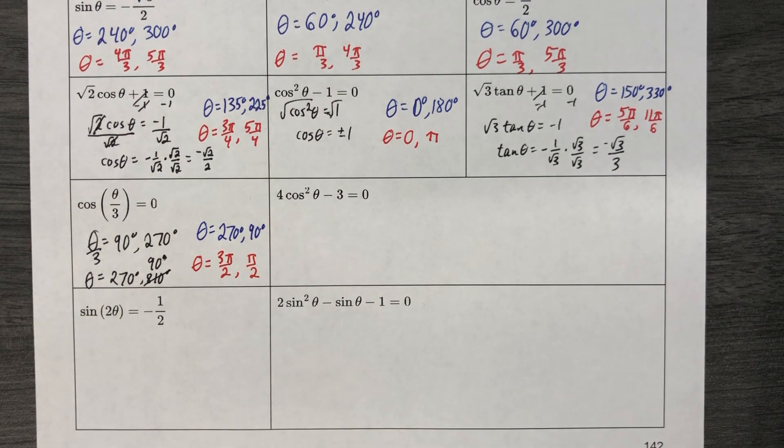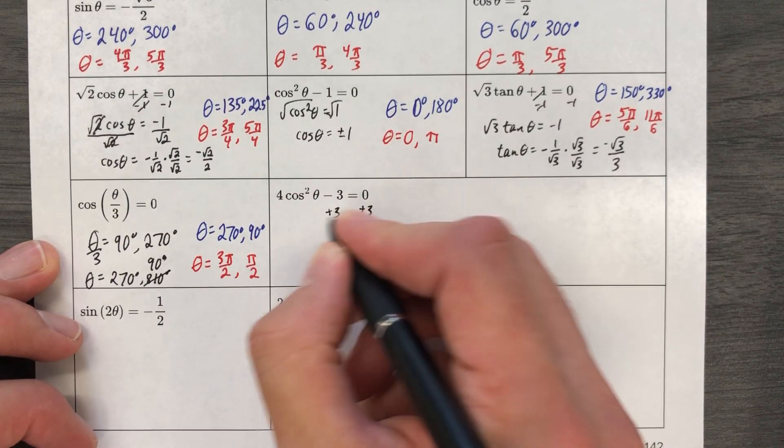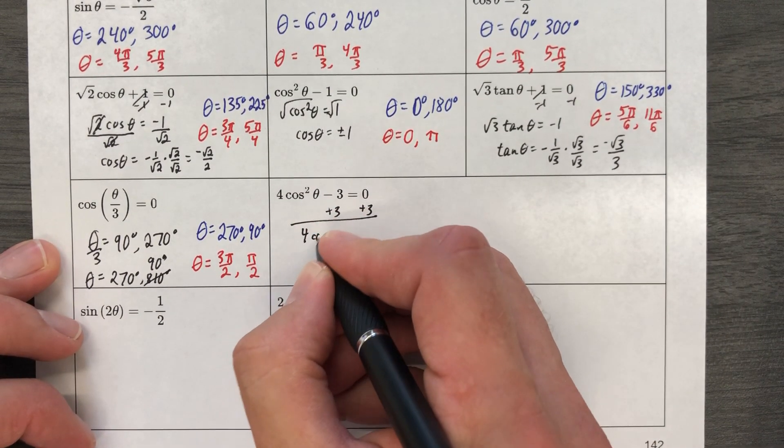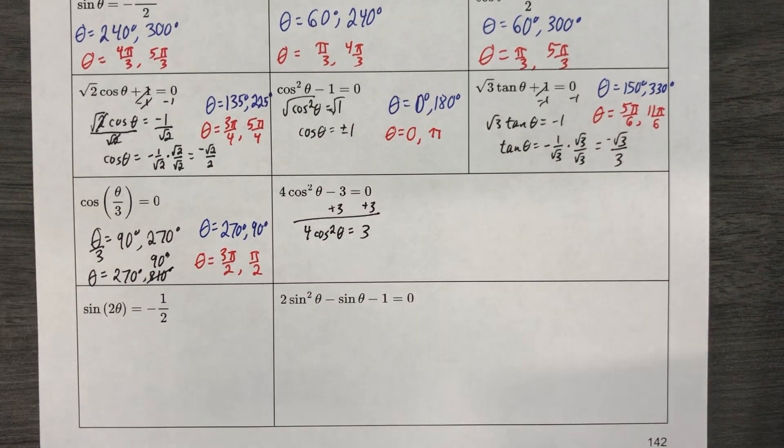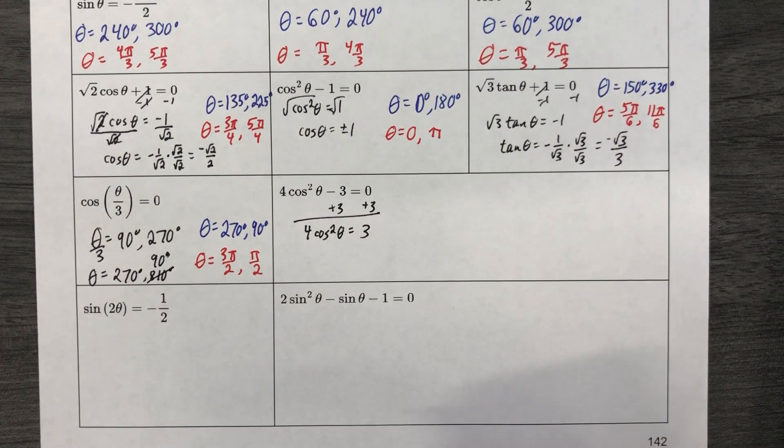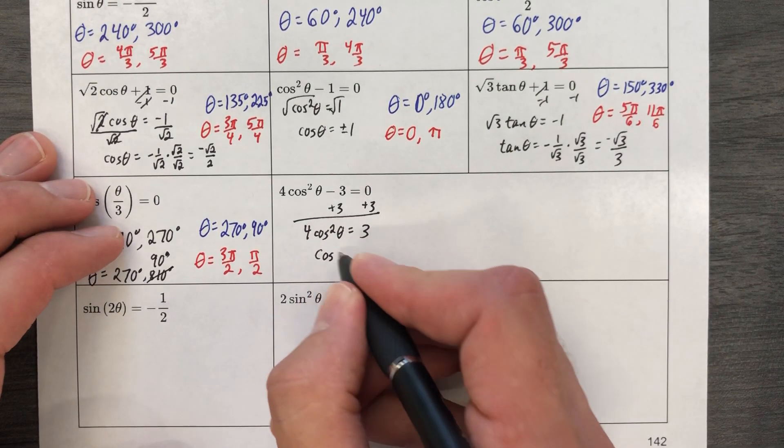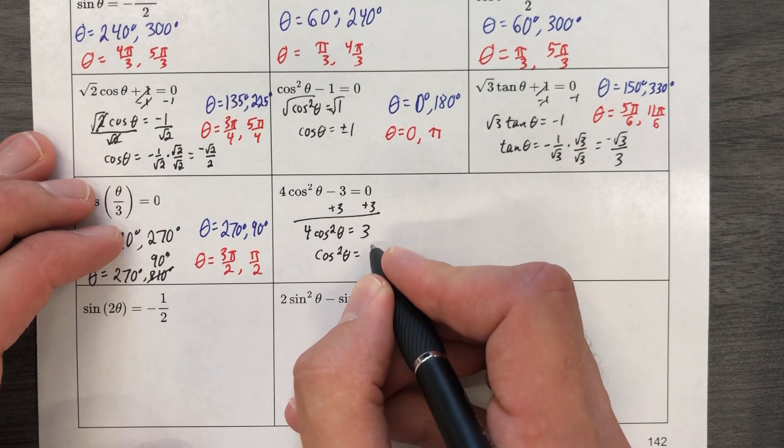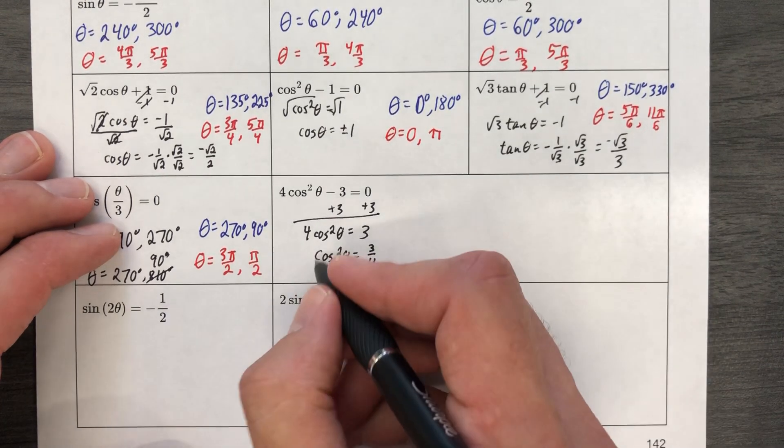Okay, for this next one, we're going to solve it like we've been solving the others. It gave you a little more space because it's going to take a little more space. We're going to add 3 to both sides. We're going to have 4 cosine squared of theta equals 3. And let's divide by 4. Make sure you square root the 4 as well, which we'll get to later if we do things in the correct order.